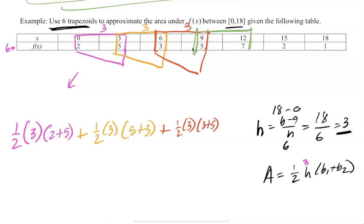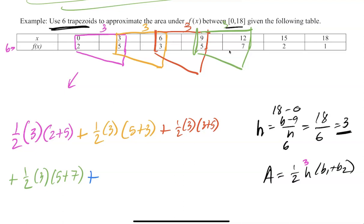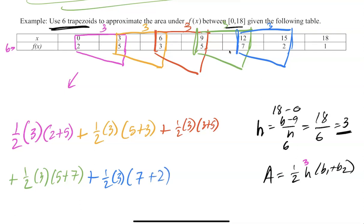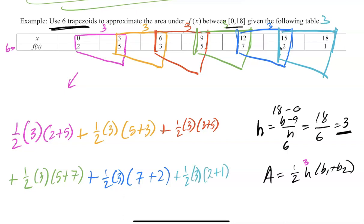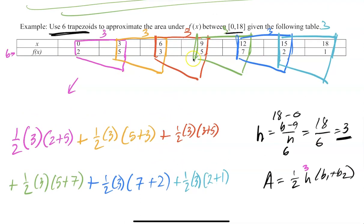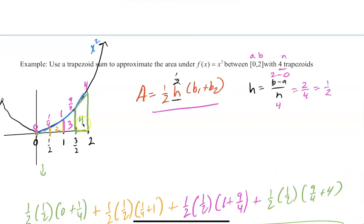Trapezoid 5 goes from x = 12 to x = 15: (1/2)(3)(7 + 2). Trapezoid 6, the last one, goes from x = 15 to x = 18: (1/2)(3)(base 1 + base 2). Add them all up and simplify — or put them in your calculator. That's how you approximate the area under a curve using trapezoids.